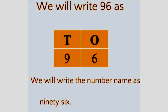And what is the number name of 96? The number name of 96 is spelled: N, I, N, E, T, Y, S, I, X — Ninety-six.